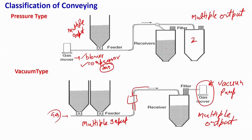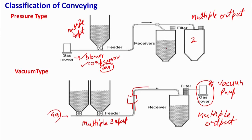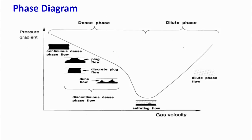The feed can be collected from one or multiple locations and delivered at multiple locations. Do not get confused — both pressure type and vacuum type can have multiple input and multiple output. What is important in pneumatic conveying is the phase diagram. In multi-phase flow we always have a phase diagram or regime diagram. The phase diagram here tells us how much solid we can transfer in pneumatic conveying.